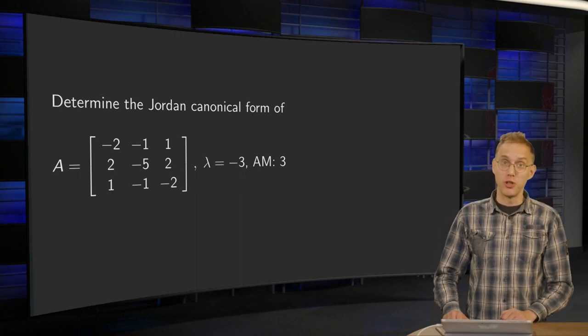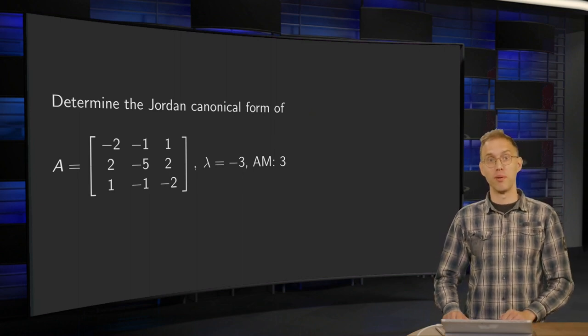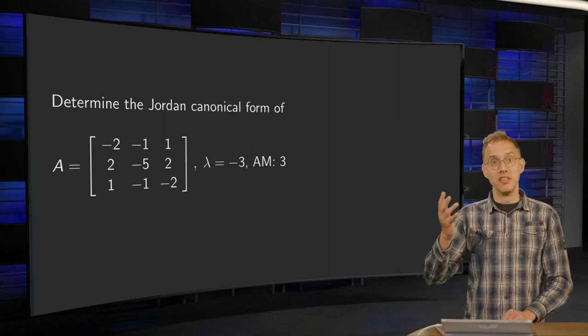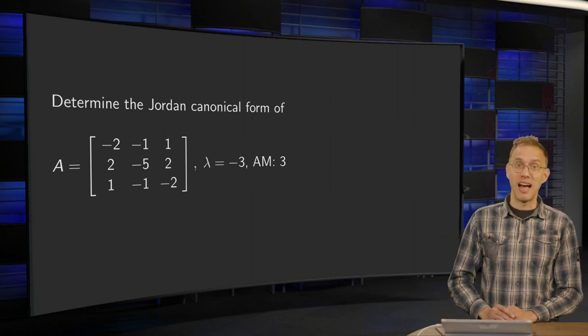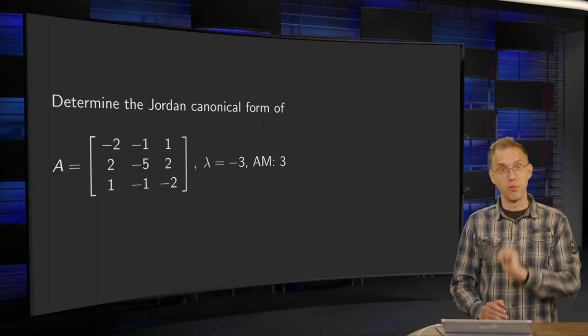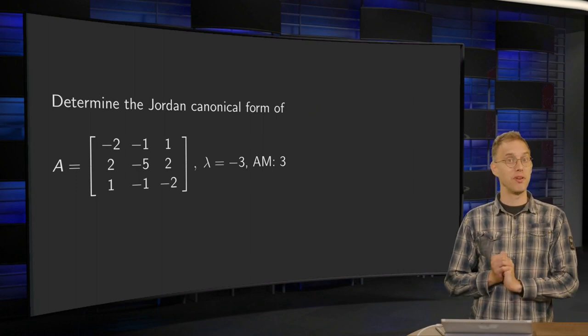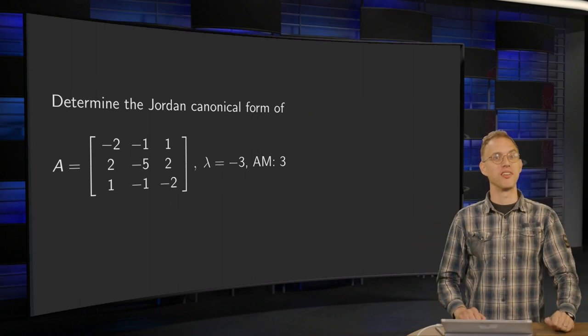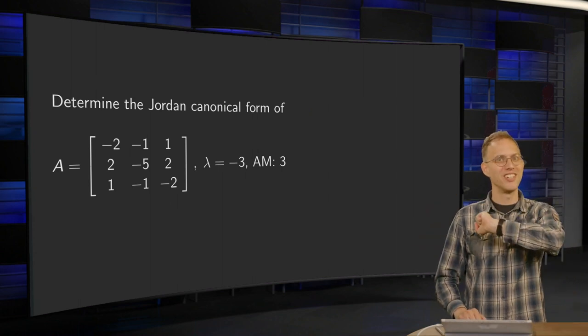Again, we are going to determine the Jordan canonical form of a matrix A, but now we encounter an eigenvalue with geometric multiplicity 2 instead of 1. What will happen if we simply use our standard method? Watch and see.